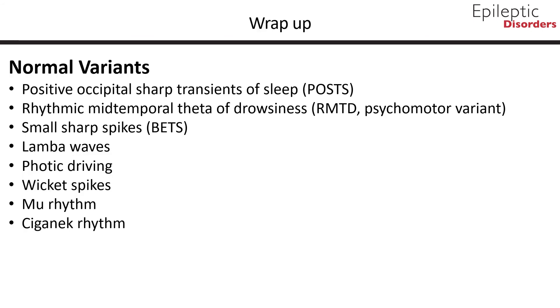To wrap up, in this module we have talked about normal variants: POSTS, RMTD, small sharp spikes, lambda waves, photic driving, wicket spikes, mu rhythm, and Ciganek rhythm.